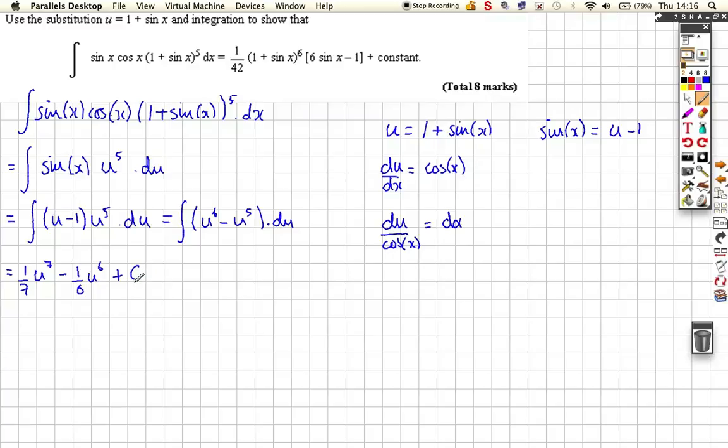And then we can just go ahead and replace our u's back with our 1 plus sine x. So we've got 1 over 7, 1 plus sine x to the power of 7, minus 1 6th, 1 plus sine x to the 6th plus our constant of integration.